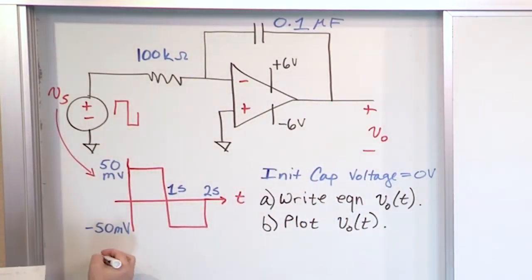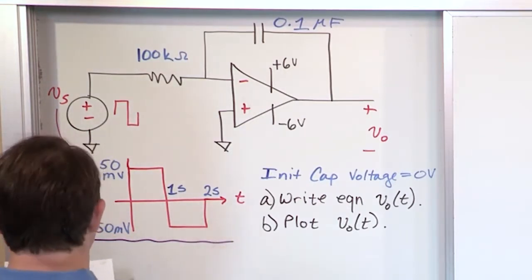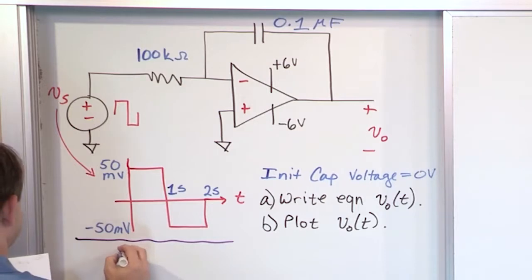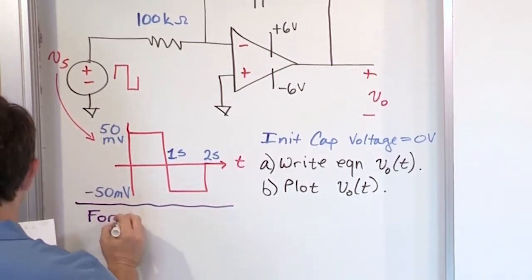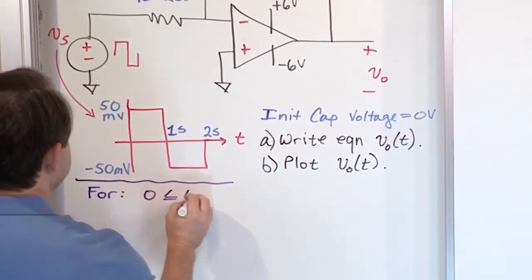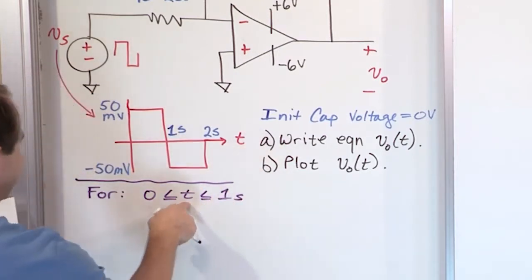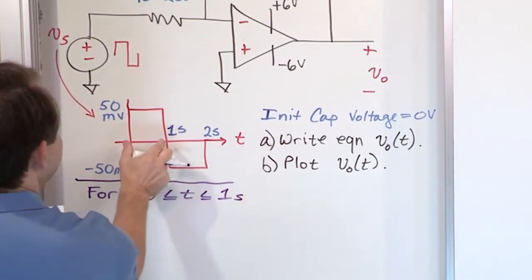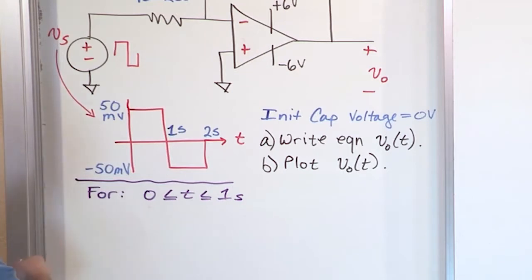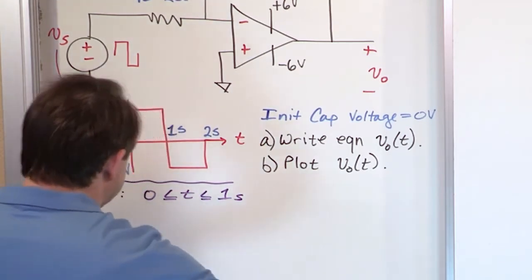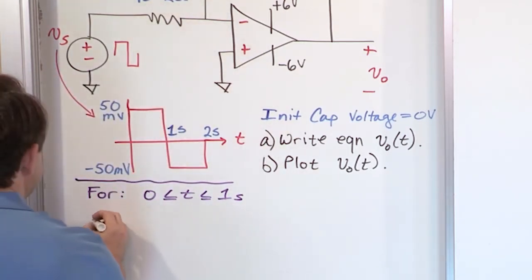Let's just get after it. We have the region of time, for the region of time zero less than t less than one second. The way you read this, t is greater than zero but less than one second. That means we're in this window of time right here. What does the output voltage look like? Well, we said that...